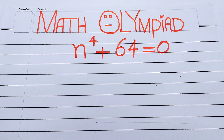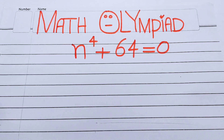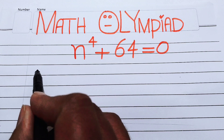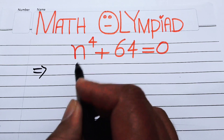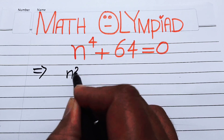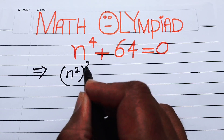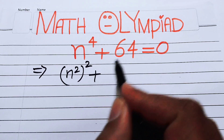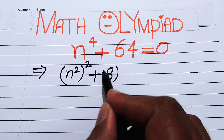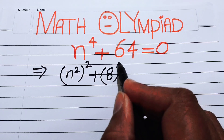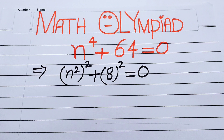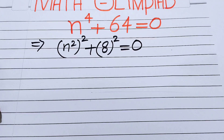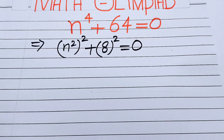The very first thing we are going to do is rewrite this equation. We write n to the power of 4 as (n²)², and we write 64 as 8², so the equation becomes (n²)² + 8² = 0.